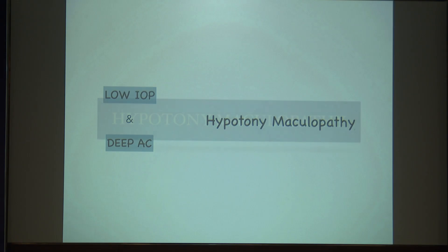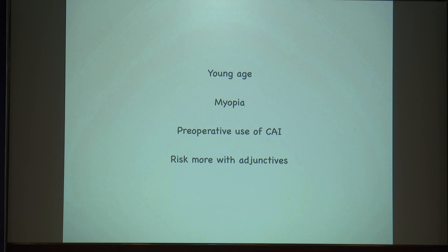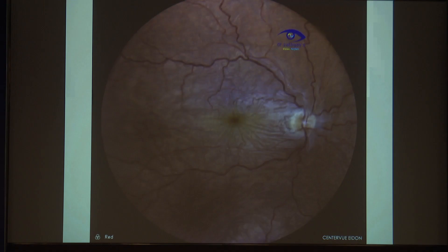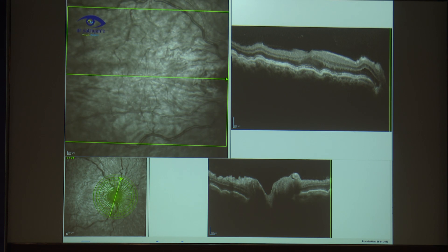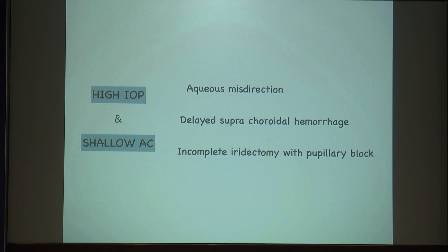Coming to hypotony maculopathy: we expect it in a young myopic patient when using more adjunctives. The patient can come with a marked decrease in vision. On fundus photo and OCT, you can see lots of wrinkling in the choroid and retina. Once you see the cause, treat it — if it is a leak, just treat it and this will resolve.